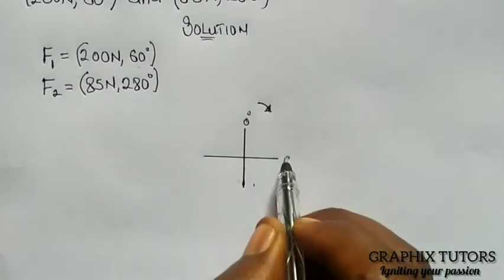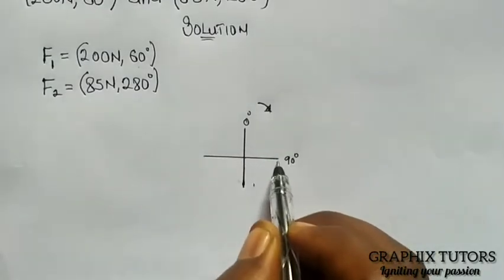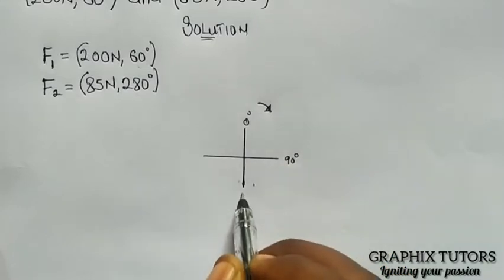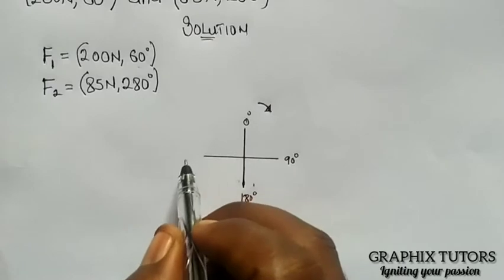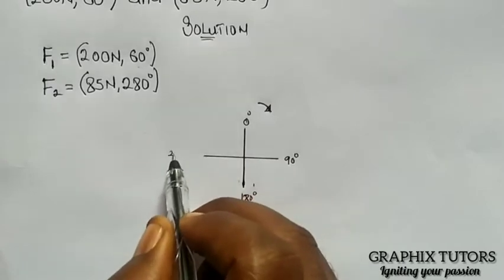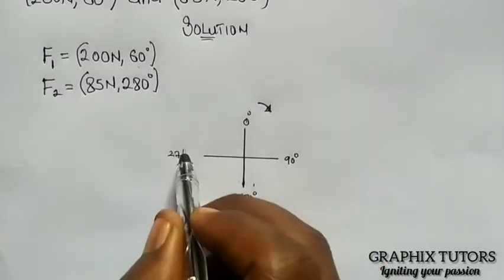Along here is 90 degree, that is my east. My south is 180 degree. And my west is 270 degree.